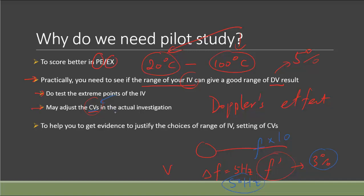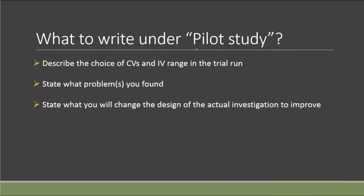Pilot study is a way to get evidence by trying different setups through trial and error, finding the control variable setting that gives the best range of dependent variable. This justifies your choices of independent variable range and control variable settings. To summarize what to write: describe the trial runs you did, the choice of control variable for each run, and how you determined which setup gives the most obvious result. Also describe the range of the independent variable and whether it can be extended.